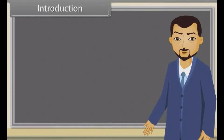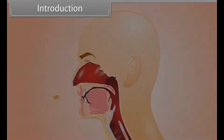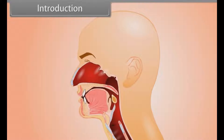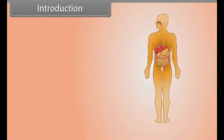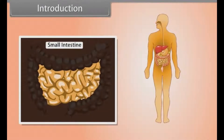Hey kids, we all know that we need energy to live and food is the primary source of energy. But you know that the process of digestion of food starts from the mouth and the action of absorption of energy is majorly starts in small intestine.